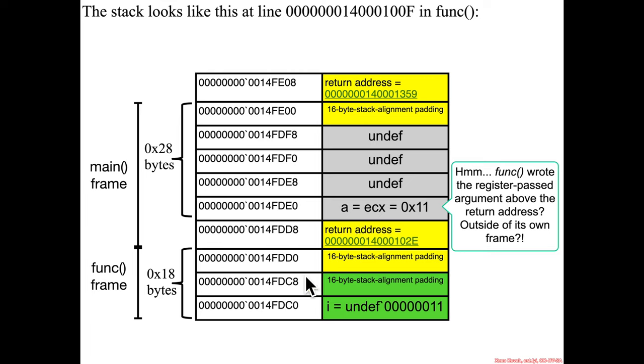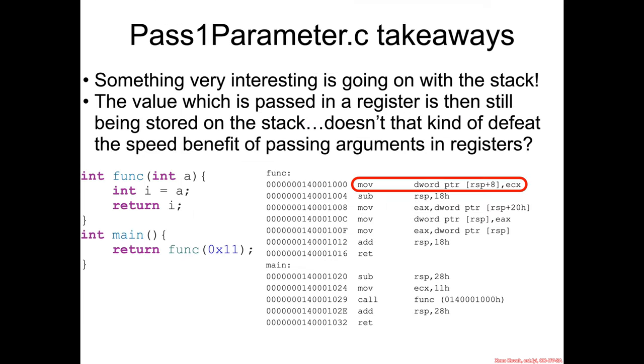It already has the function argument - it was passed within a register from main to func - but then func goes and sticks it in memory. That seems kind of weird, so that is pretty much our takeaway from this single parameter passing thing. Something weird is going on in the stack and we're going to investigate that in the next set of videos.